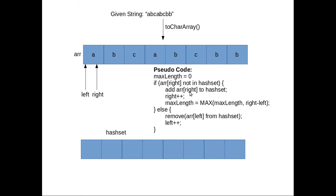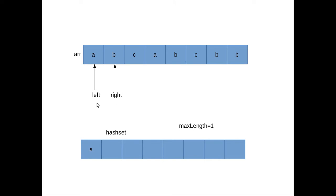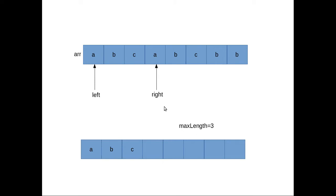Here is the pseudo-code. Right is pointing to 'a' — it's not in the hash set, so we add 'a' and update right by 1. Max length is right minus left, which is 1. Now right points to 'b' — add it to the hash set. Right moves to 'c', which is also not in the hash set, so we add 'c' and the max length becomes 3. Now right is pointing to 'a', but 'a' is already in the hash set, so we remove the element pointed to by left, which is 'a', and update the left pointer. Then we add 'a' back — max length remains 3.